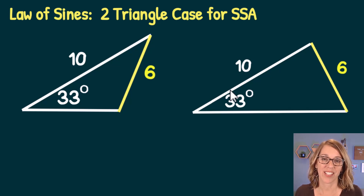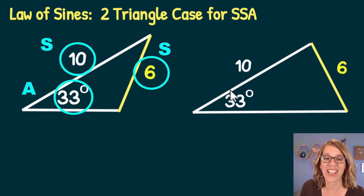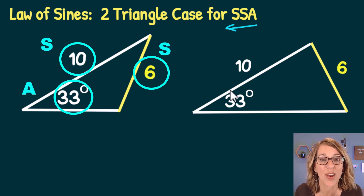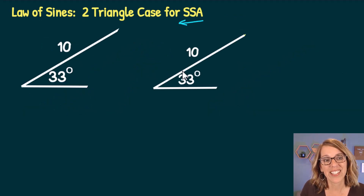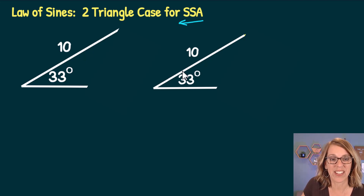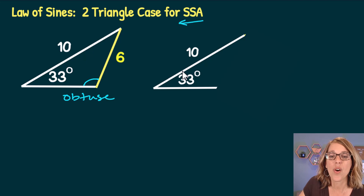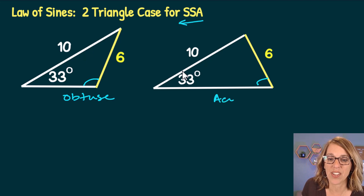We are going to solve the ambiguous case for the Law of Sines when you're solving for a side next to an angle. This is the side-side-angle case, but if you read it backwards it's the angle-side-side — which makes it easy to remember that there are two possible constructions. With a side of length 6, a 33-degree angle, and a side of length 10, you can position the side of length 6 to create either an obtuse angle or an acute angle.